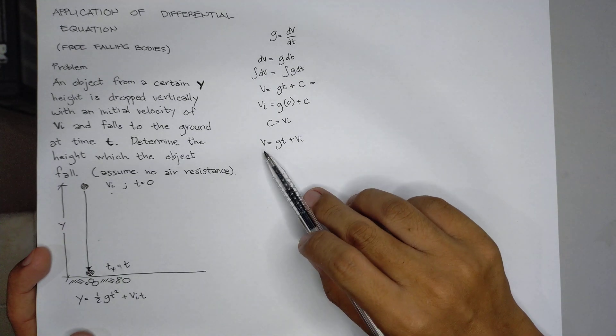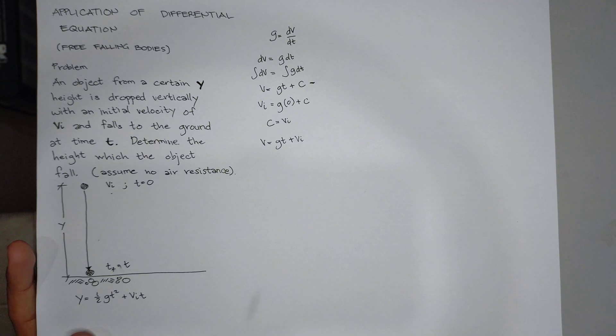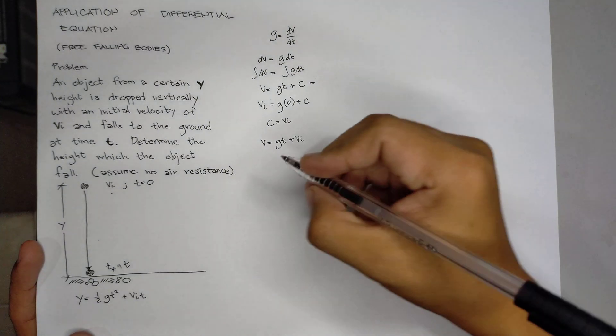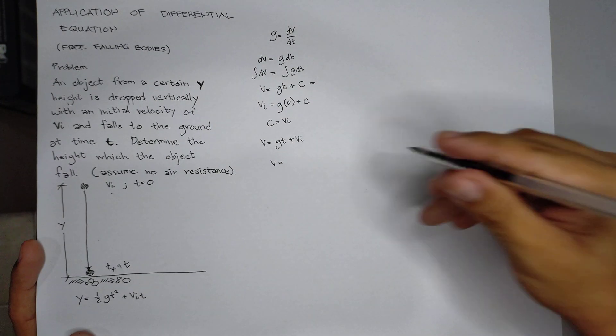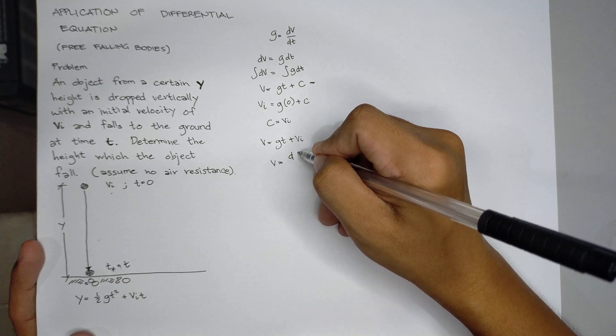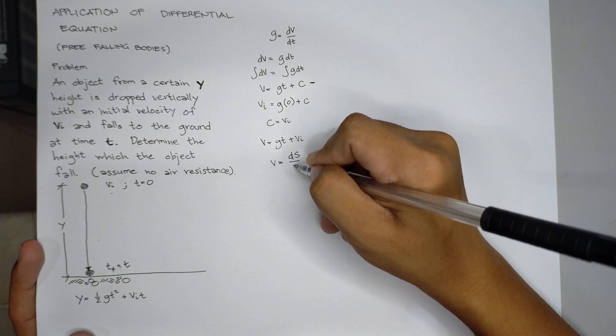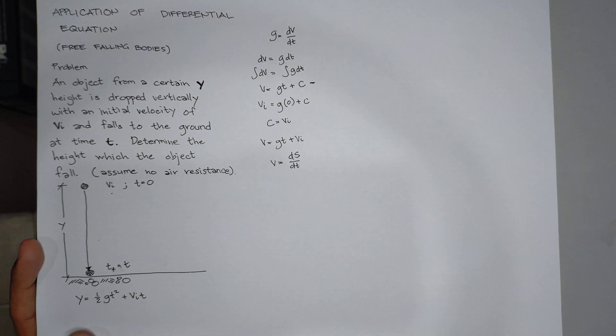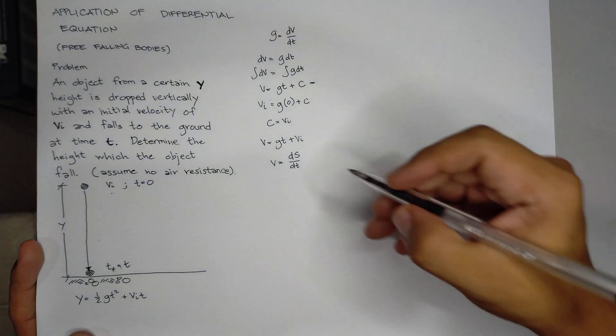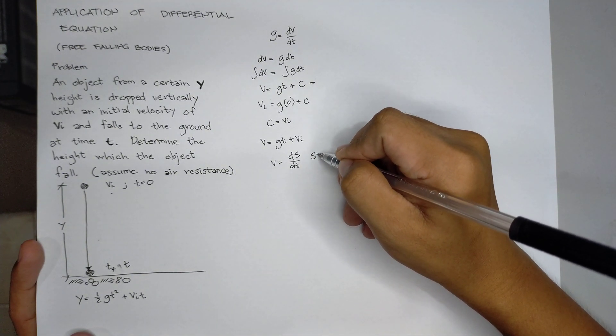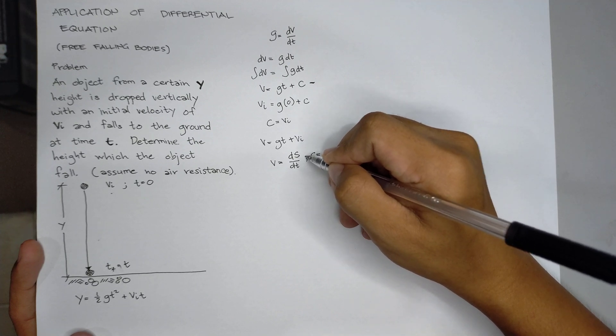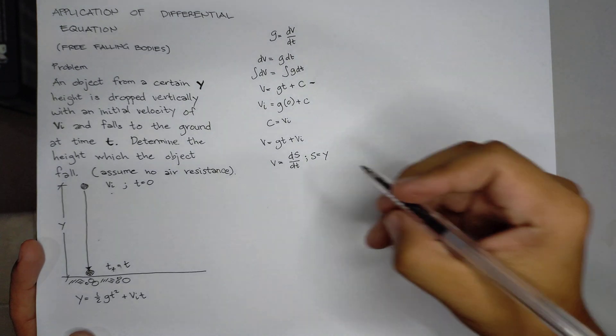Also, velocity is also determined as the derivative of distance with respect to time. But from our problem, the distance which is y equals y.